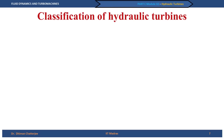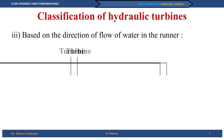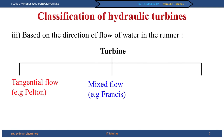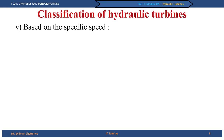Continuing with the classification of hydraulic turbines: based on the direction of flow of water in the runner, it can be tangential flow in the case of the Pelton turbine, mixed flow in the case of Francis, or axial flow in the case of Kaplan or propeller turbines. We can also classify based on the arrangement of the turbine shaft — the shaft can be arranged vertically or horizontally.